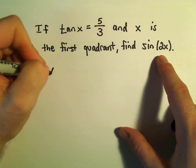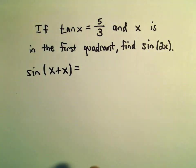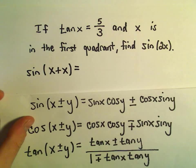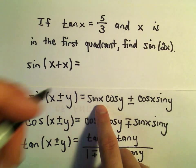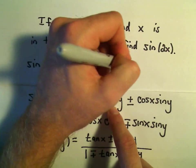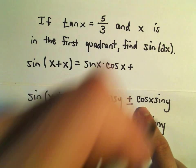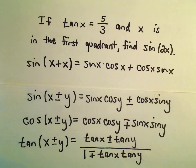Well again, we can write sine of 2x as sine of x plus x. And now going back to our identity, it says we have sine of x plus, well in this case, another x. It says we'll get sine of x times cosine x plus cosine x times sine x.